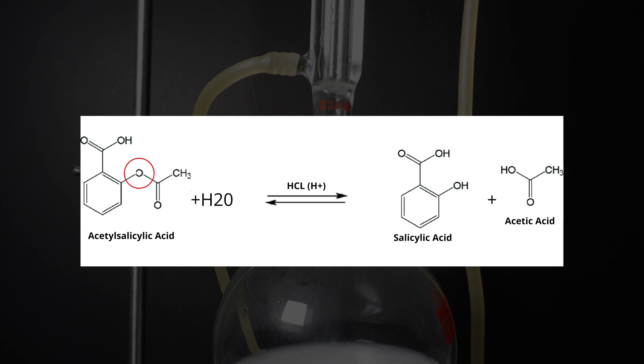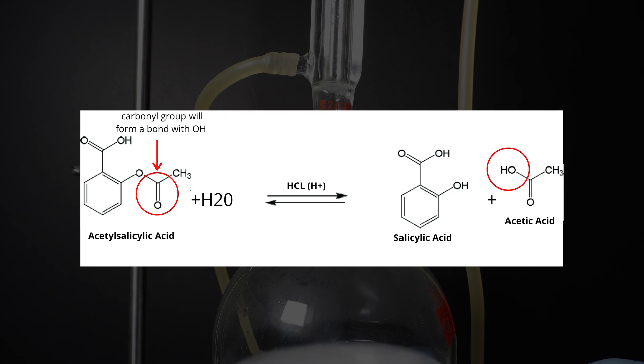During this reflux a few things will be happening to change the ASA into salicylic acid and acetic acid. This acid ester hydrolysis will be breaking this ester bond. That oxygen forms a bond with free floating hydrogen ions in the solution to create an OH on the salicylic acid molecule. Next we have our carbonyl group that will form a bond with the OH from the water and create our acetic acid.